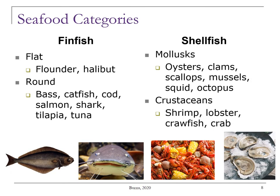Our final category of meat products is fish. There are two major categories to classify fish: fin fish and shellfish. Fin fish are those that have scales and can be further divided into flat and round fish. Flat fish such as flounder and halibut swim like a wave and have eyes on one side of their head. Round fish swim straight and have eyes on both sides of their head.